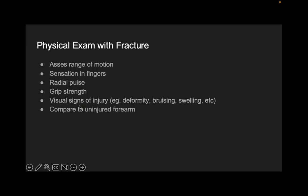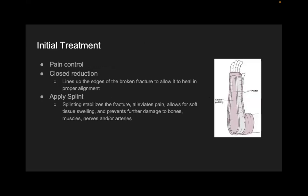For the physical exam of these fractures, check range of motion — especially if you're suspecting dislocation of the DRUJ or proximal radial head. Check sensation, pulses, grip strength, and look for signs of injury, deformity, bruising, and swelling. Always compare to the uninjured arm — that's the rule of thumb.